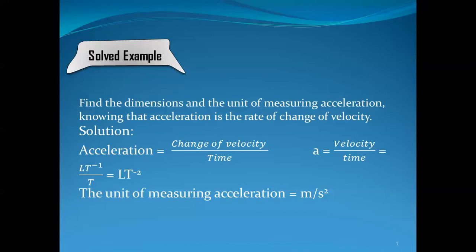The unit of length is the meter and the unit of time is the second, so the unit of measuring acceleration is meter per second squared. This example explains the steps for finding the dimensional formula of any derived quantity and from it obtaining its unit of measurement.